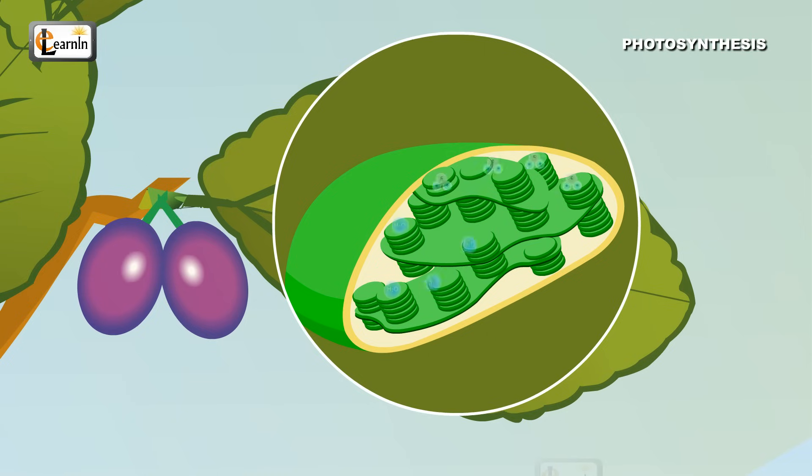Once the carbon dioxide and the water reach the chloroplasts in the presence of sunlight, the process of photosynthesis starts to take place.